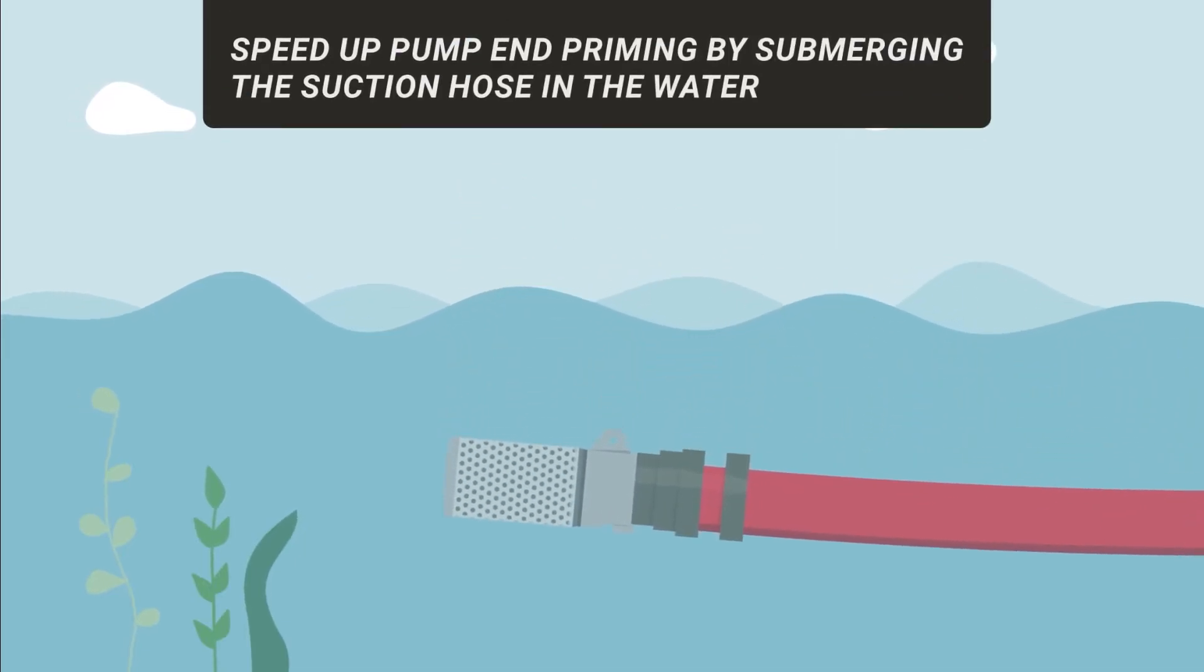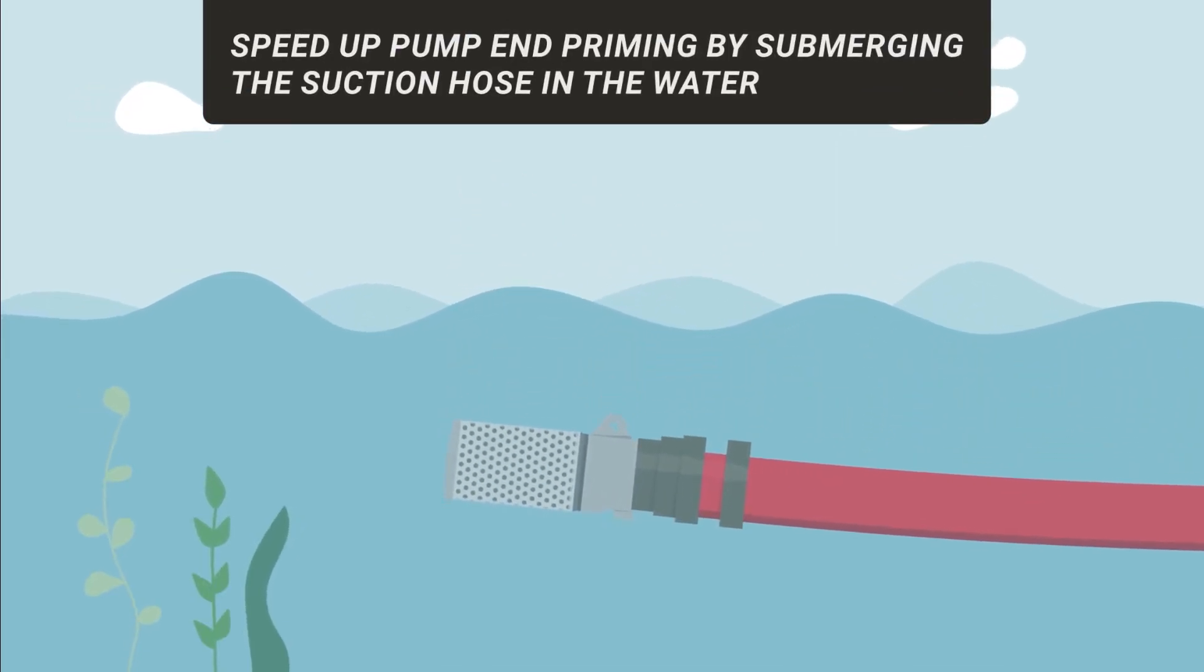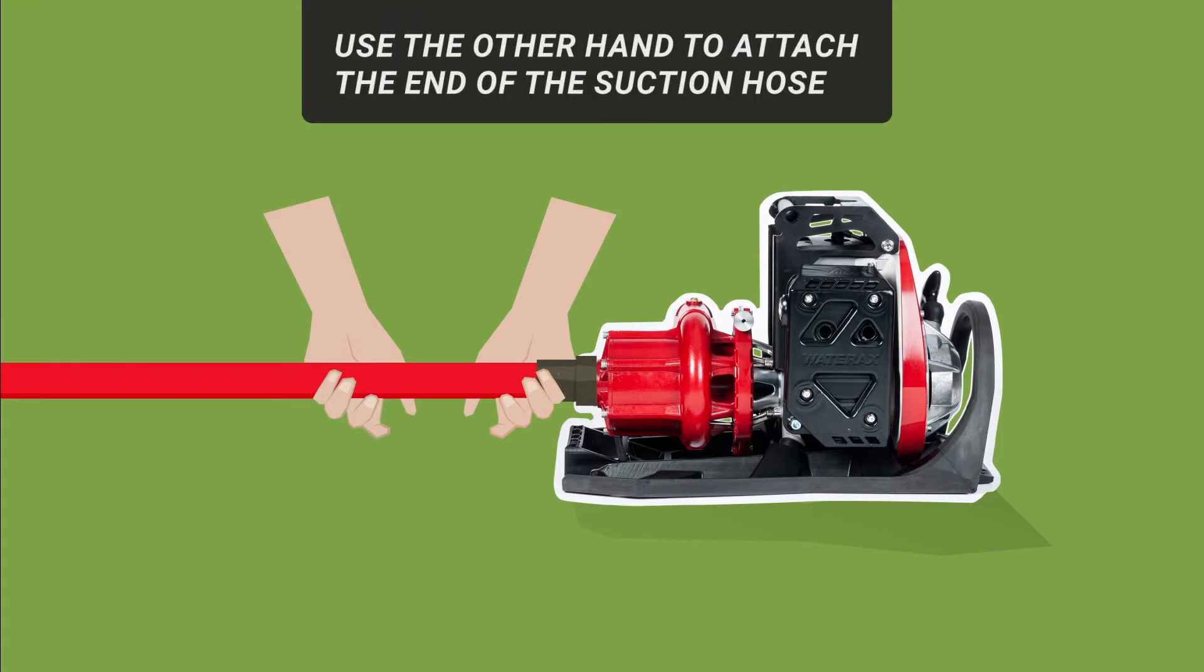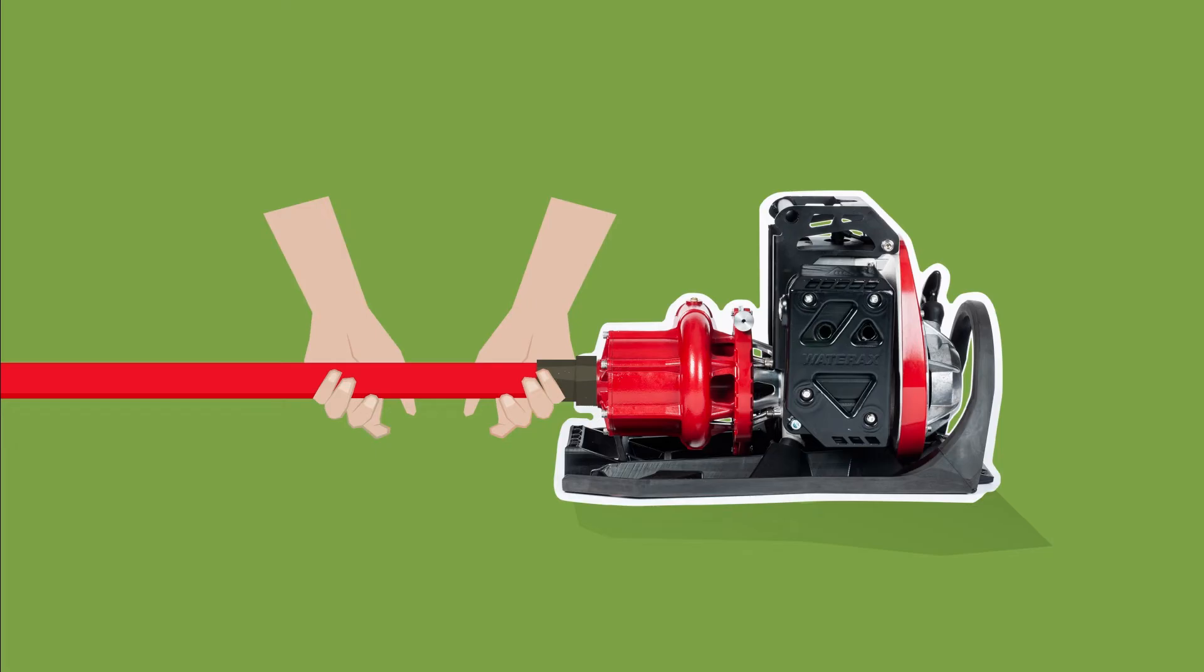Speed up pump and priming by submerging the suction hose in the water before attaching the pump intake. Use one hand to keep the suction hose level and straight to take pressure off the threads. Use the other hand to attach the end of the suction hose to the pump intake. Hand tighten as much as possible.